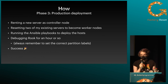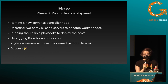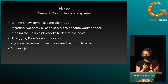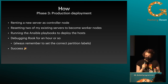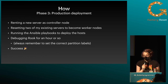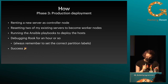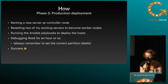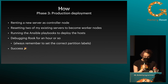Phase three: production deployment. I only had two servers at the time, so I needed a third one because three servers is the minimum. I reset two of my existing servers to become the worker nodes. I ran the same playbooks I had already used locally. Then I debugged my persistent storage for an hour or two, because partition labels do matter even though you don't really see them that often. Success.